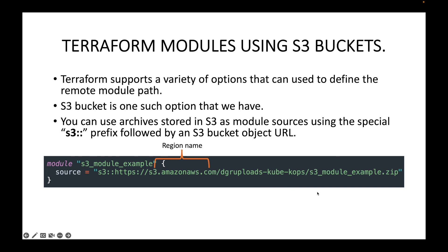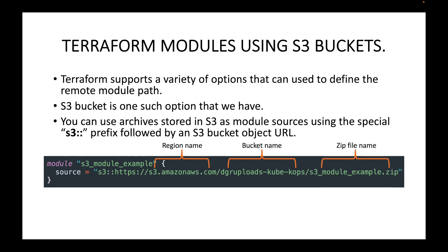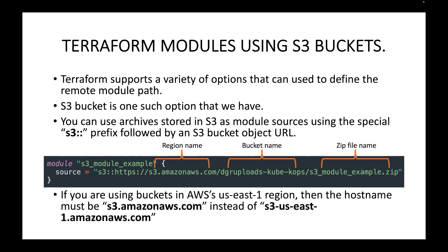The S3 bucket URL is slightly different — you use `s3::https:///` followed by the region name where the S3 bucket is available, then the bucket name where you have stored your root module, and then the archive name where your root module is stored. You have to give the source in this particular format.